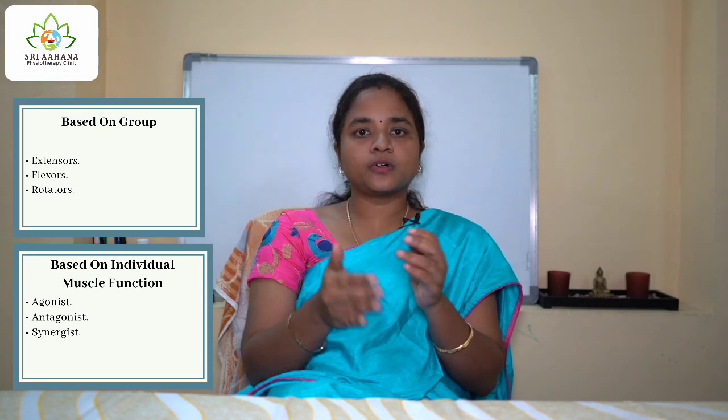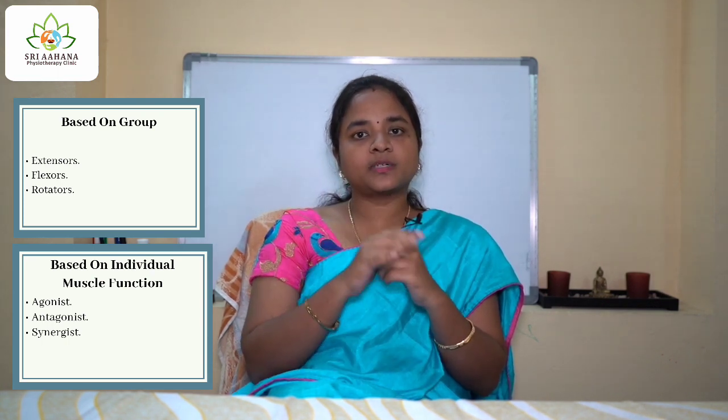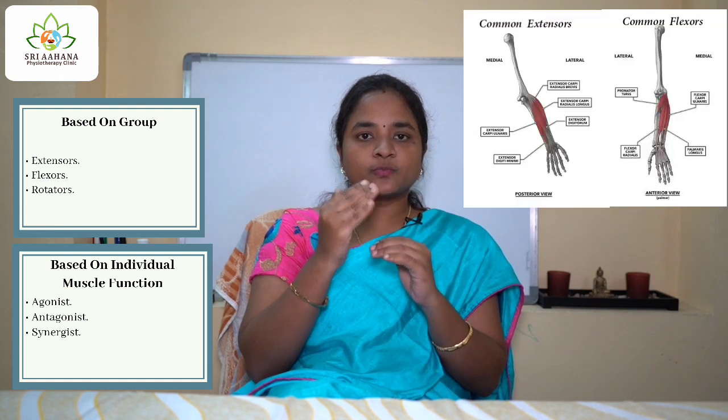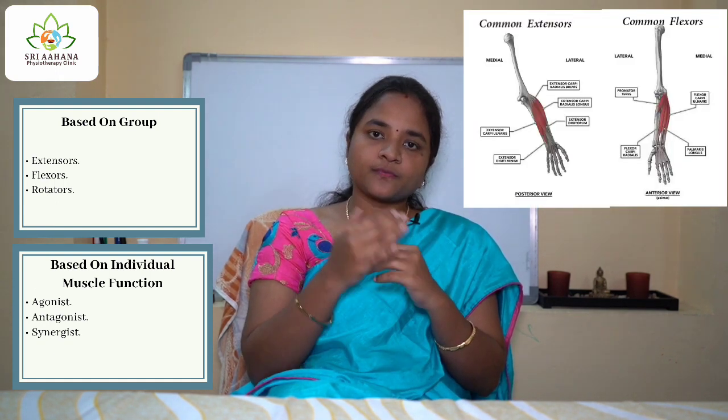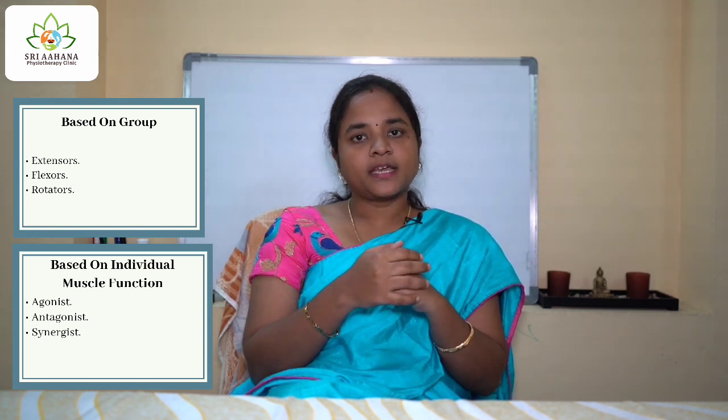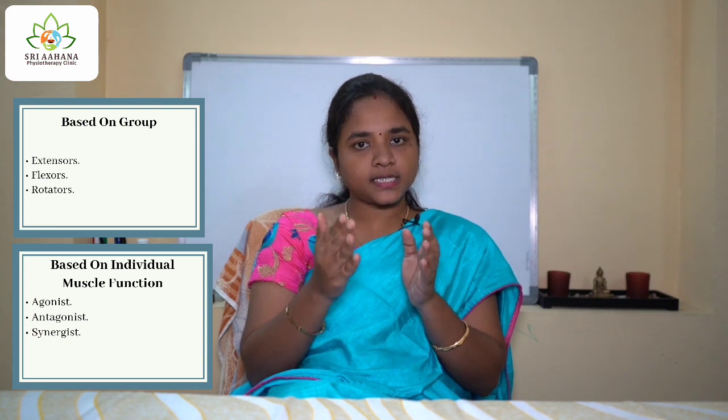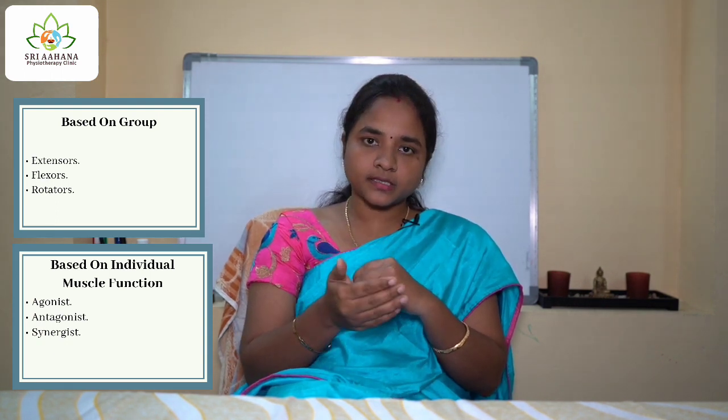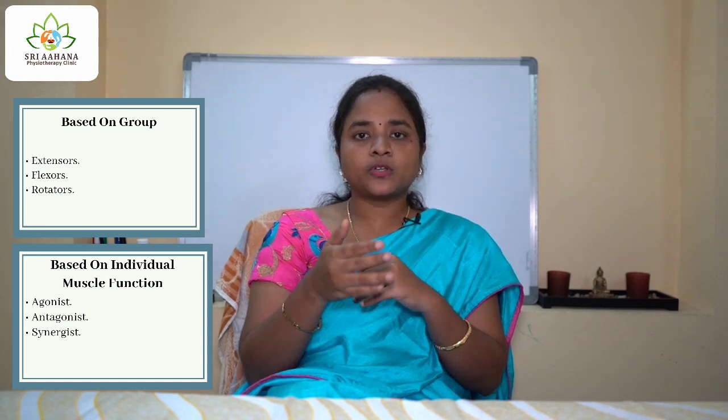There is one more classification where muscles can be grouped or treated in isolation. When grouped, they are commonly called flexors, extensors, or rotators. When referring to isolated muscles, they are called agonist, antagonist, or synergist. In the following videos, you will learn what an agonist, antagonist, and synergist are. This is how muscles are basically named, and I hope this video has helped you understand how muscles derive their names and remember them easily. Thank you.